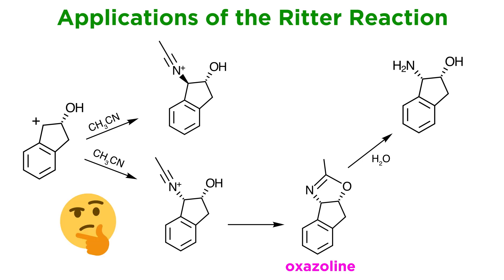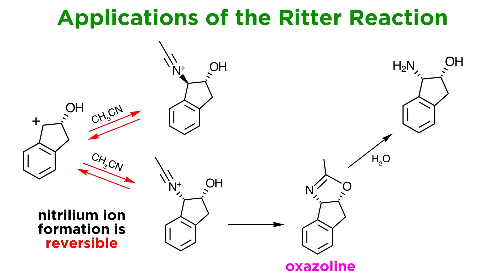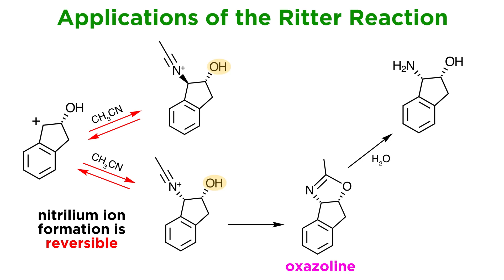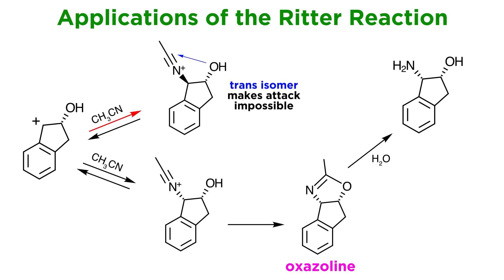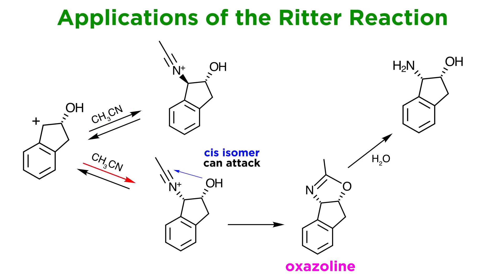So where does the stereoselectivity come from? It turns out that the attack of the nitrile onto the carbocation, or the formation of the nitrilium ion, is reversible, and when we operate in the absence of water, there are no nucleophiles to capture the nitrilium ion other than the adjacent hydroxyl group. If the trans-nitrilium ion is formed, attack is hindered because of the strain that would result, since the groups are on opposite sides of the ring. The cis-nitrilium ion, on the other hand, quickly and irreversibly snaps shut to form the oxazoline due to the proximity of the groups, and that is how the problem was solved.